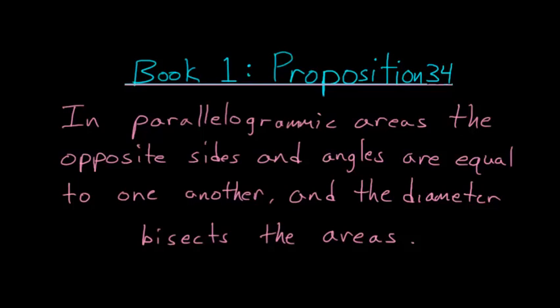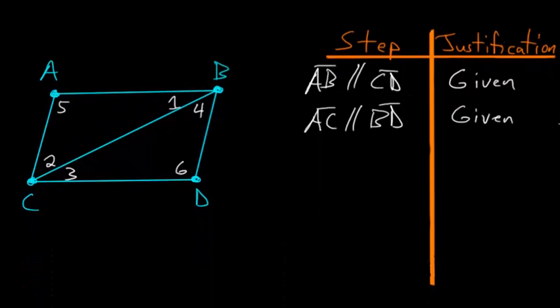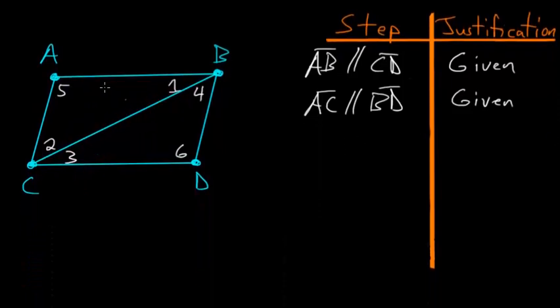For Book 1, Proposition 34 of Euclid's Elements: in parallelogramic areas, the opposite sides and angles are equal to one another, and the diameter bisects the areas. Basically, if we have some parallelogram ABCD where AB and CD are parallel and BD and AC are parallel with each other, we want to prove that the opposite sides and opposite angles are equal to each other.